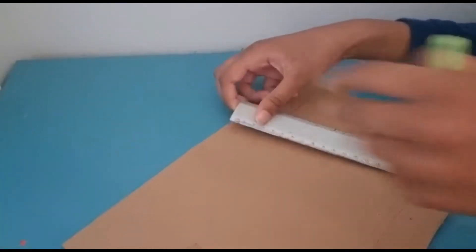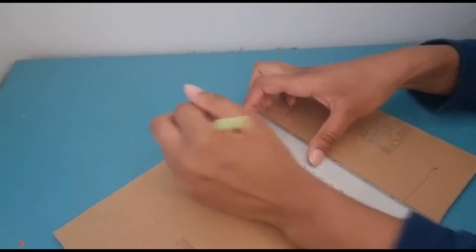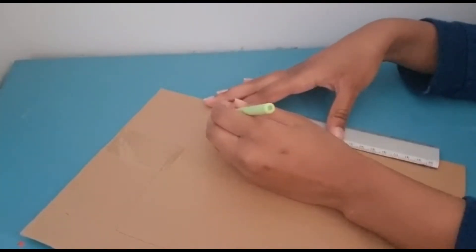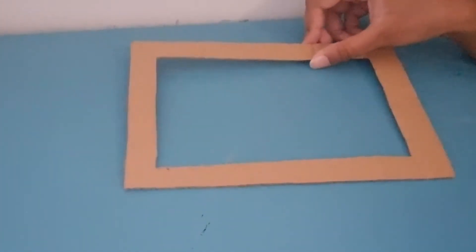Then make a border as thick as you like. I made mine two centimeters thick. Cut it out and then cut out the inner square that you traced earlier.